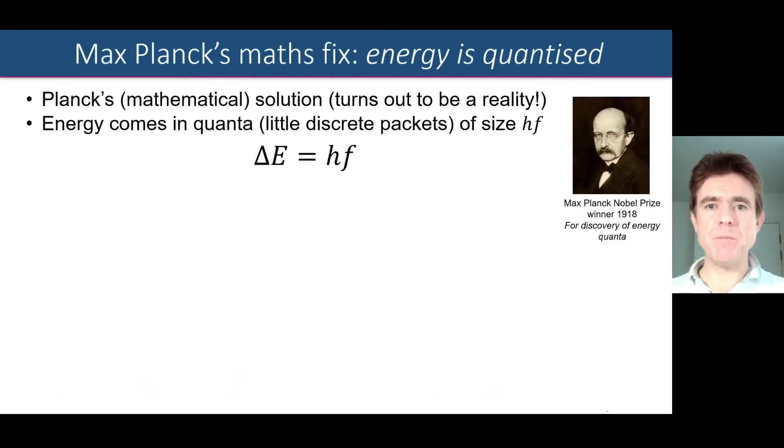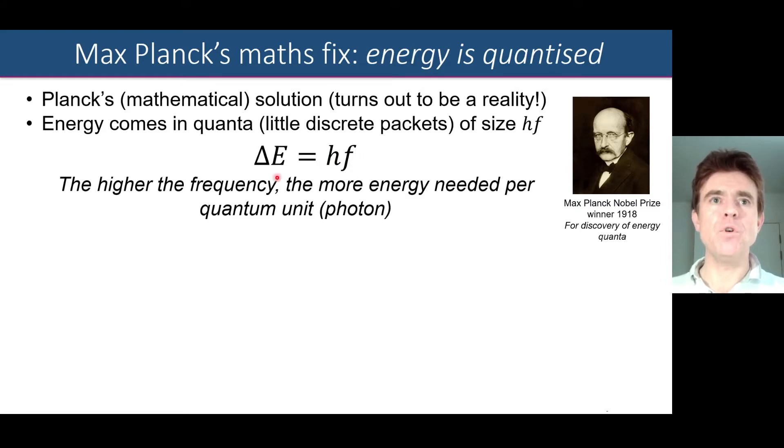So this is where Max Planck came in with what he thought was just a mathematical fix to the problem. But it turns out to be profoundly true of physical reality, which is that light energy comes in the form of quanta. In other words, it comes in little discrete packets. You can't just have an arbitrary amount of energy for a given frequency of light. Rather, for a given frequency of light, it has to come in packets of size delta E, where the packet of energy is of size simply hf. It's just proportional to the frequency. So therefore, the higher the frequency of the light, the more the energy we need to make a unit or a quantum unit, one quantum, one photon of that frequency of light. So it sounds simple, but it has a lot of ramifications.